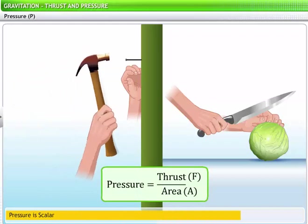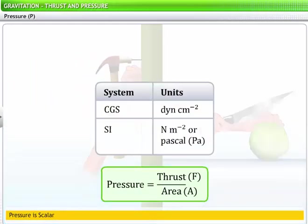Pressure is scalar and is measured in dyne per centimeter square in the CGS system, or Newton per meter square or pascal, denoted by PA, in the SI system.